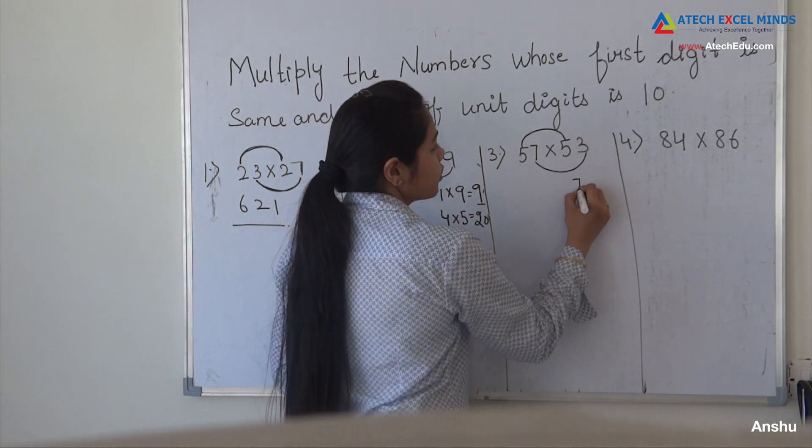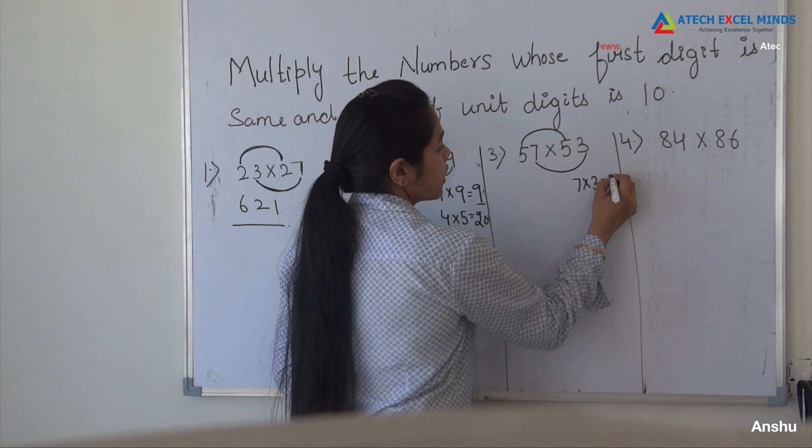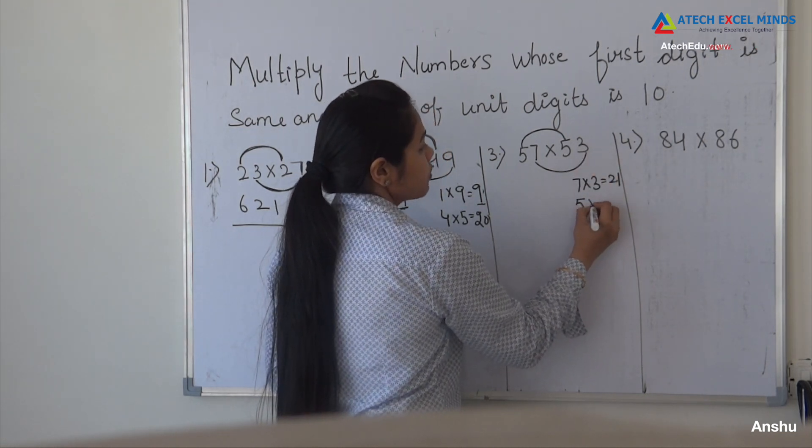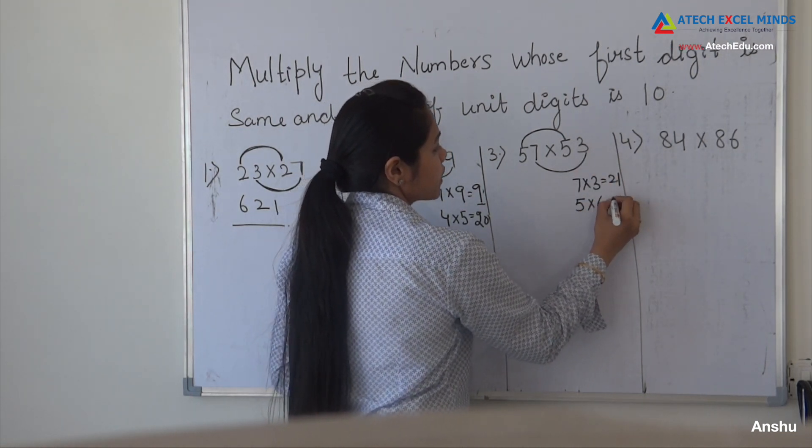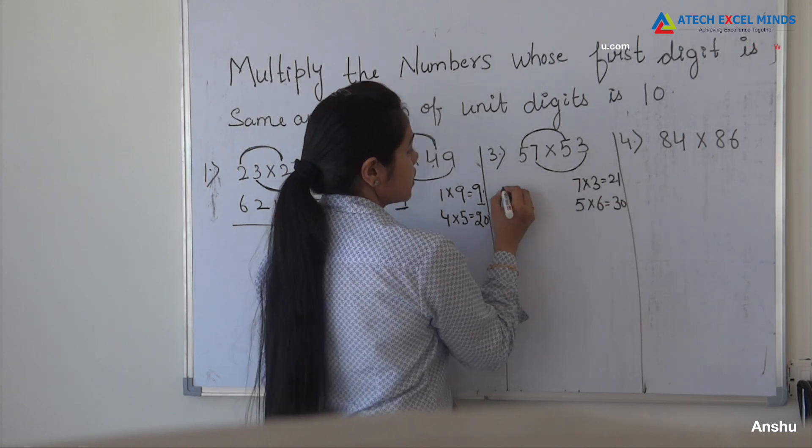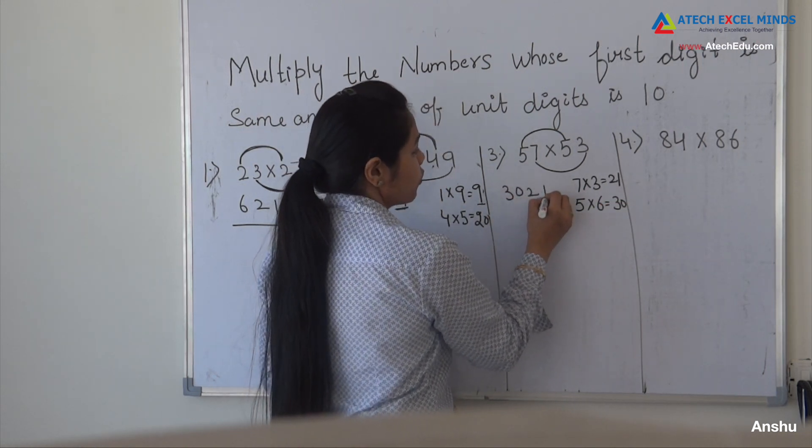So multiply the unit digits, you will get 21. And what is the first digit? 5. Next number to 5 is 6. So multiplication is 30. Write here 3, 0, 2, 1.